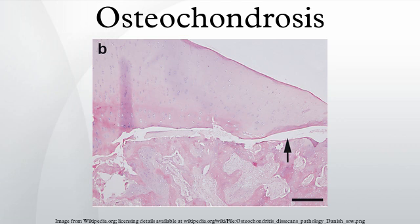In humans, these conditions may be classified into three groups: spinal — Scheuermann's disease, which is a curve in the thoracic spine; articular — Legg-Calvé-Perthes disease, Kienböck's disease, Panner's disease, and Freiberg's infraction; and non-articular — this group includes Sever's disease and other conditions not completely characteristic of osteochondrosis, such as Osgood-Schlatter's disease and osteochondritis dissecans.